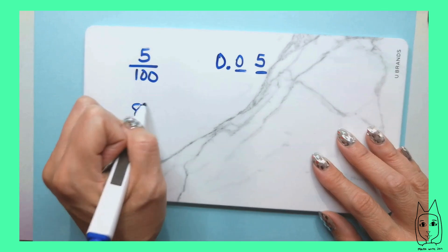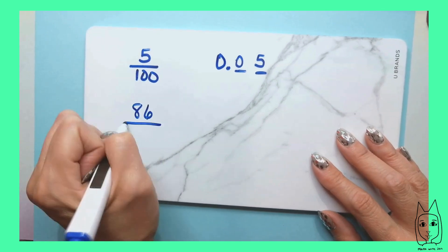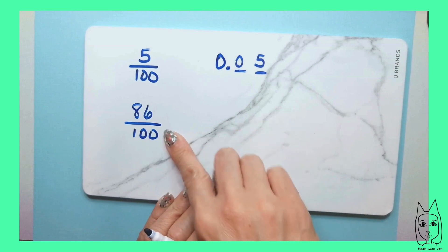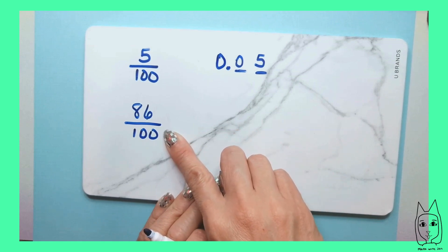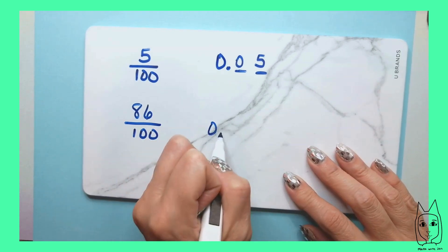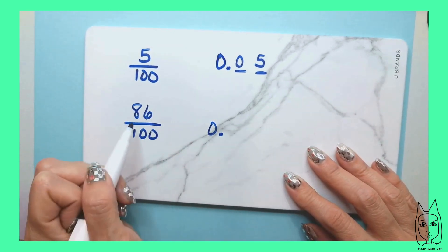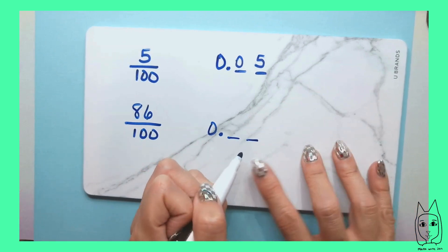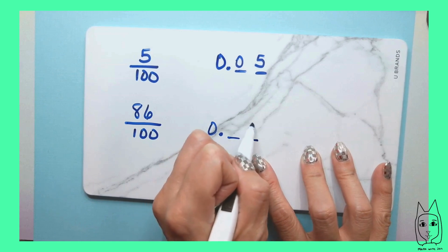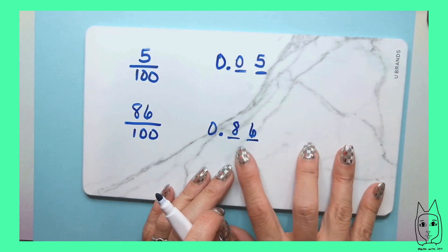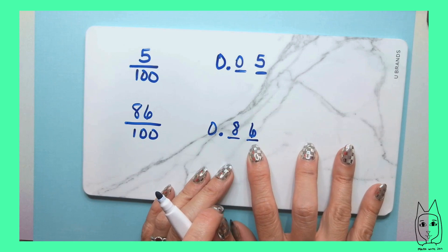Say we have eighty-six hundredths. Here's our fraction — we have something being broken up into a hundred equal parts and we have eighty-six of those. When we go to write our place value, we have to go to the hundredths place value and write in eighty-six. So that's eighty-six hundredths: zero point eight six.